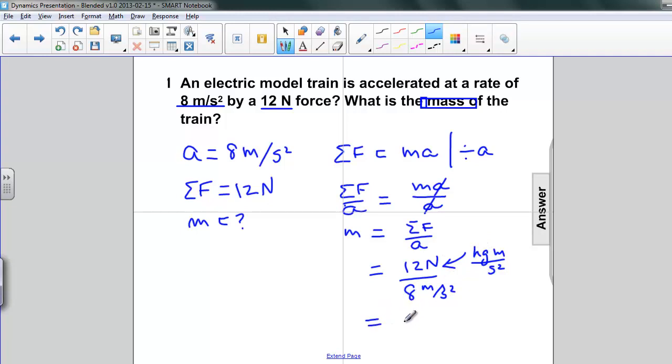So, we have 12 over 8, which you can work out in your head or in your calculator. You get 1.5, meters per second squared have canceled, and we're left with kilograms. Exactly what we would have anticipated as far as the unit is concerned. Our answer is 1.5 kilograms.